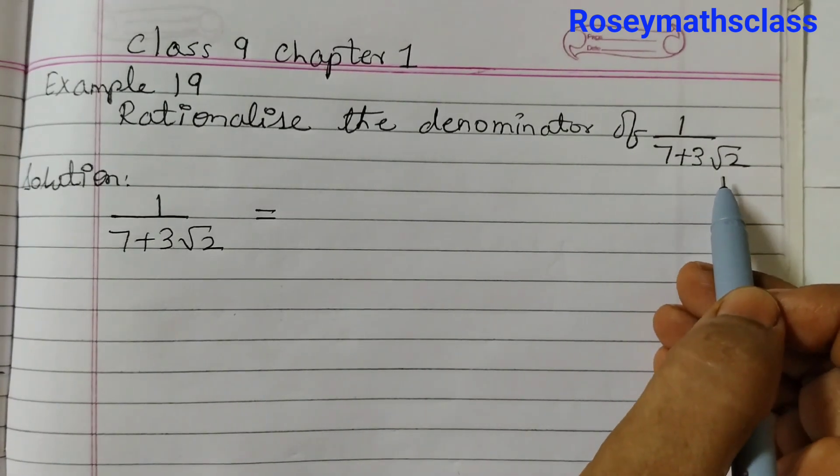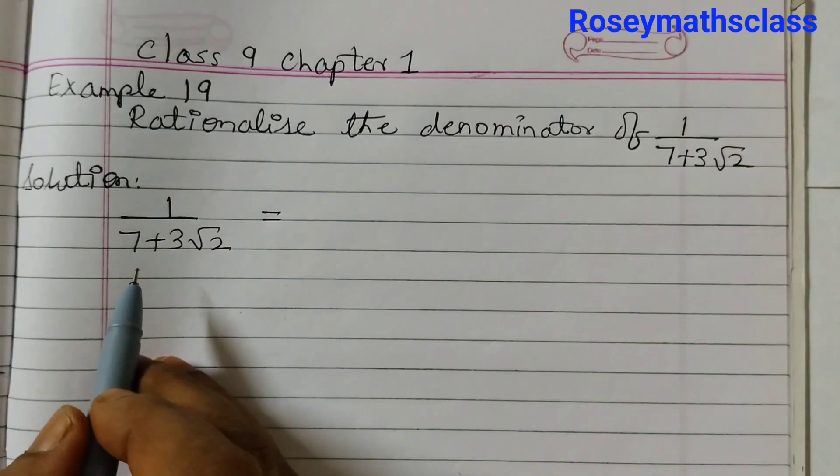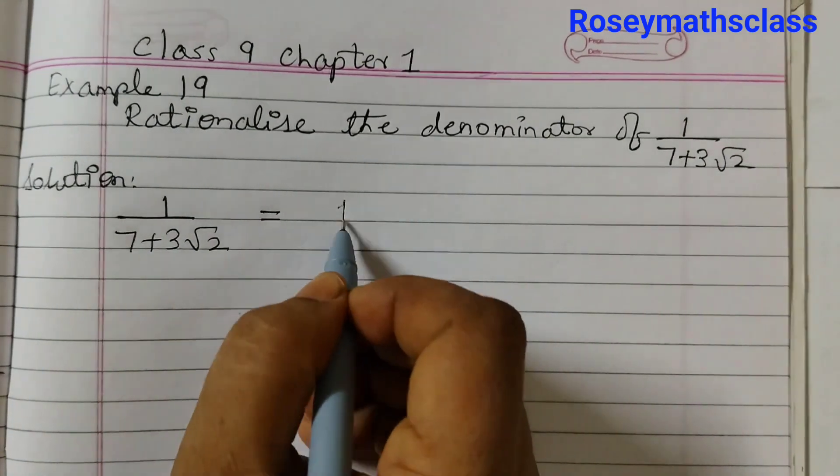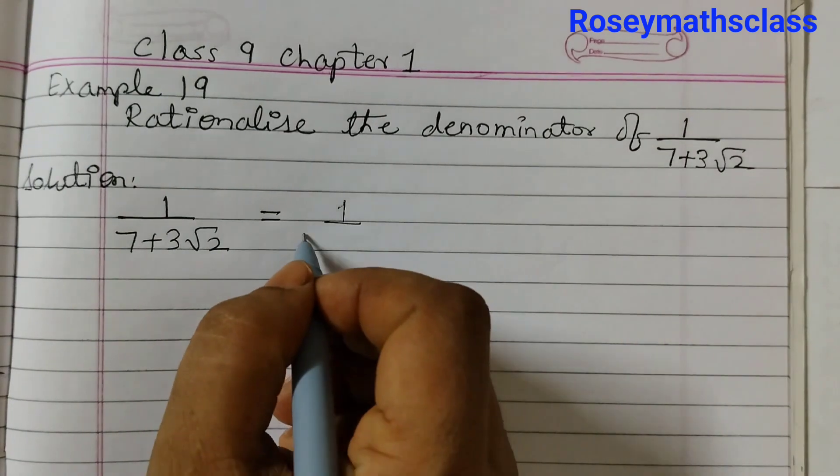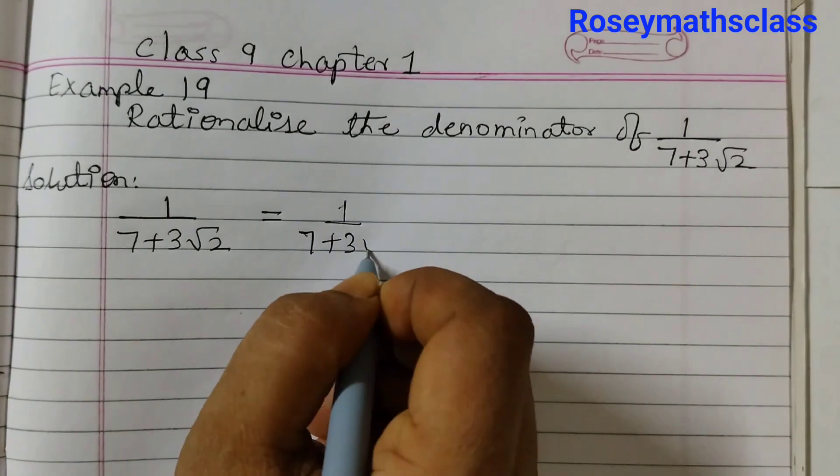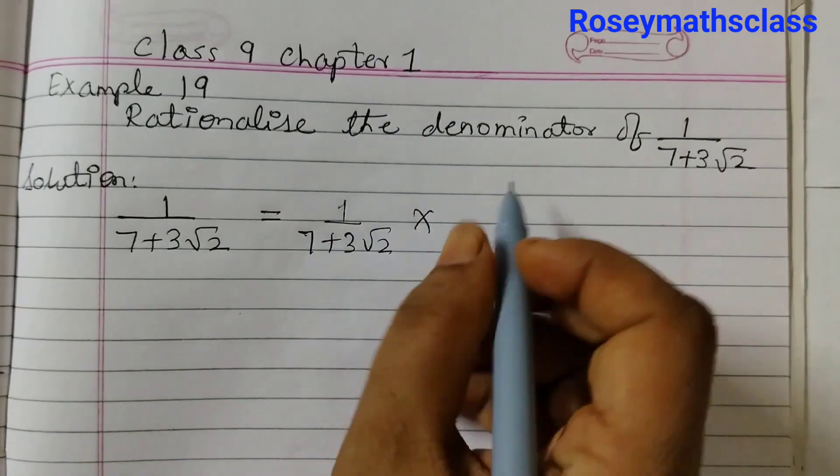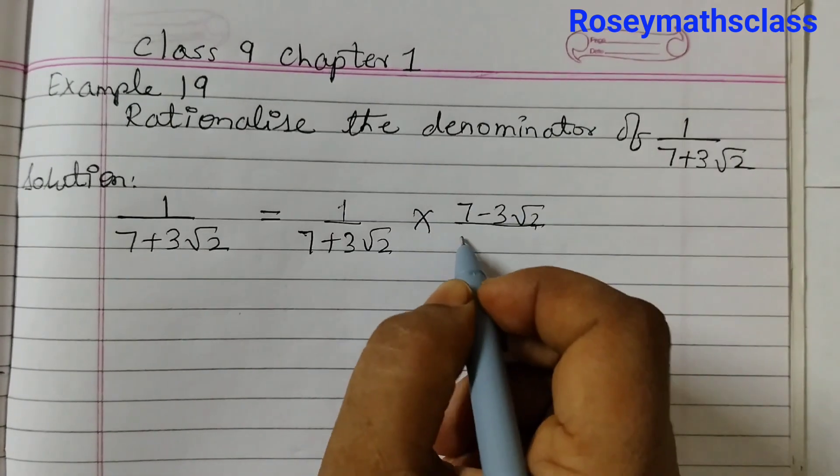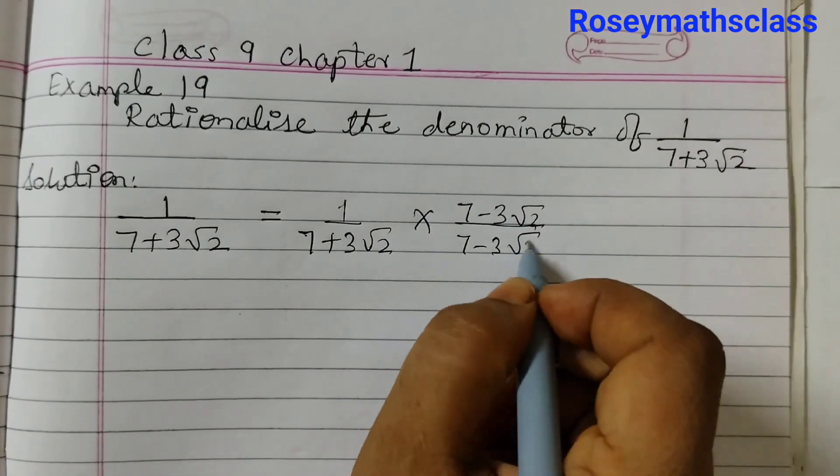So for this we will multiply and divide this by 7 minus 3 root 2. So 1 by 7 plus 3 root 2 into 7 minus 3 root 2, 7 minus 3 root 2.